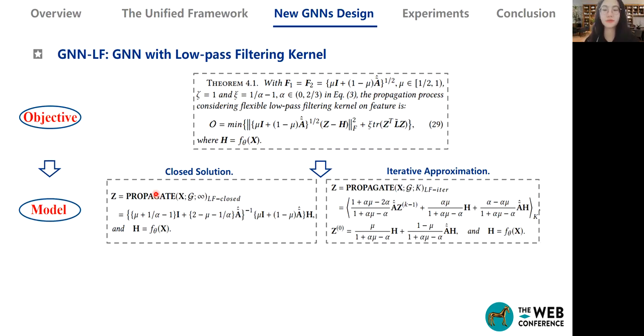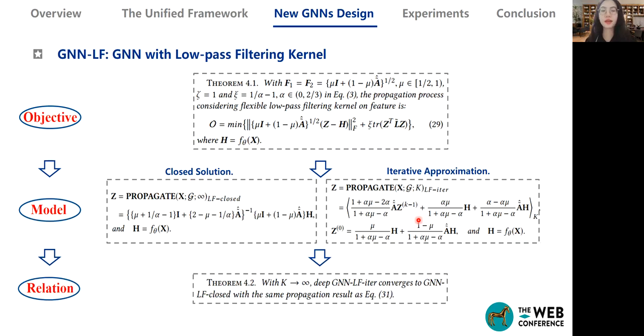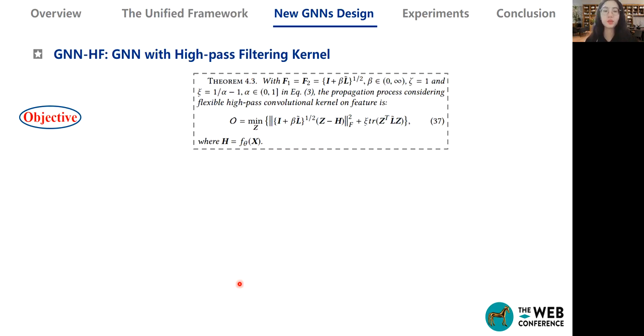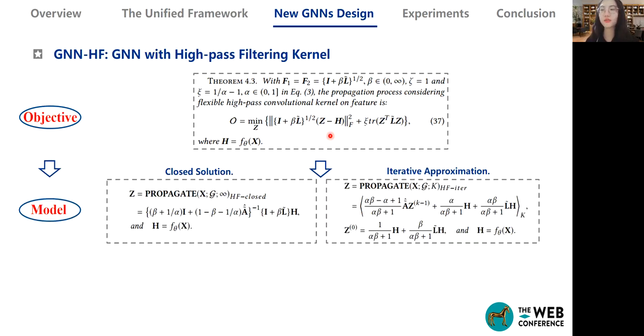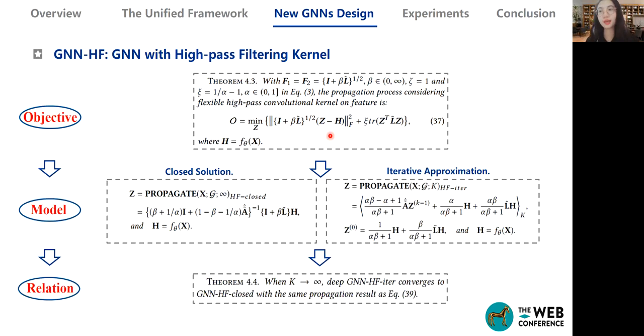We find two solutions to design new graph neural networks. We minimize the objective function to get a closed form solution, and then we use the iterative approximation to get the iterative form solution. Note that we can also find the relations between these solutions. We find that GNN-LF with iterative form converges to closed form when K tends to infinity, and we prove this in our paper. Furthermore, similar to GNN-LF, we now consider preserving the similarity of H and Z in both original and high-pass filtering spaces. For neatness, we choose the following objective, and we also have the closed form and iterative form models with similar relations.